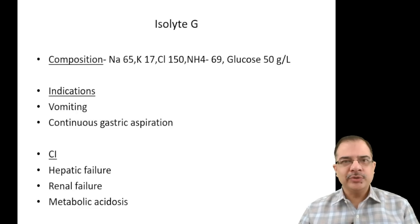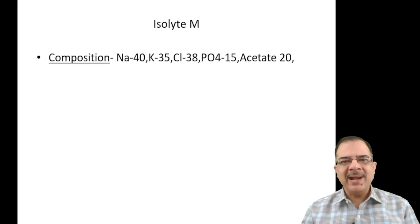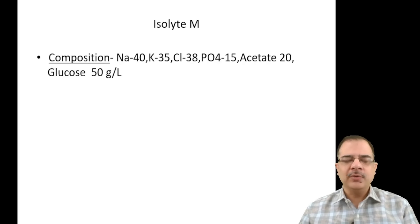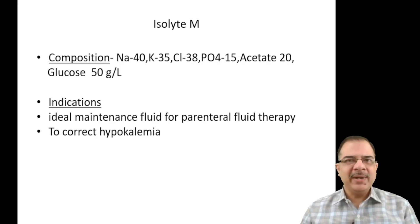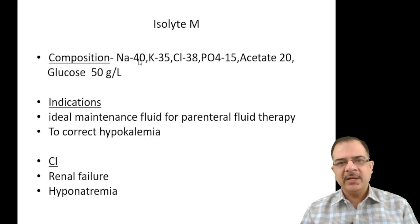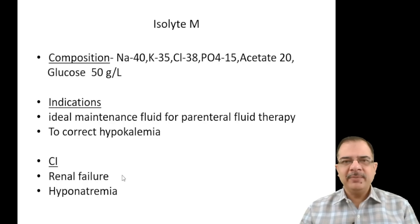Isolyte M — 'M' stands for maintenance. Composition: sodium 40, potassium 35, chloride 38, phosphorus 15, acetate 20 (which converts to bicarbonate), and glucose 50 grams per liter. It is an ideal maintenance fluid for parenteral therapy and corrects hypokalemia due to its high potassium content. Contraindications are renal failure (risk of hyperkalemia from high potassium) and hyponatremia (low sodium concentration).